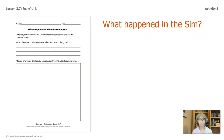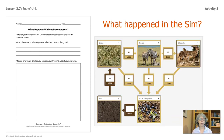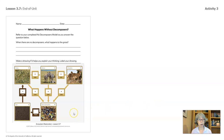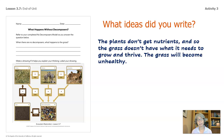What happened in the sim? Here's a sample. With no soil nutrients or soil matter coming from the beetles, there is less available for the grass. If the grass isn't thriving, then there's less food matter for the zebras. If the zebras are not thriving, then there's less food matter for the beetles and there's less food matter for the cheetahs. Everything in the food web is impacted. Make sure you show your teacher and classmates what you drew and what you learned from the simulation. The plants don't get nutrients, so the grass doesn't have what it needs to grow and thrive — that's what happens when there are no decomposers.